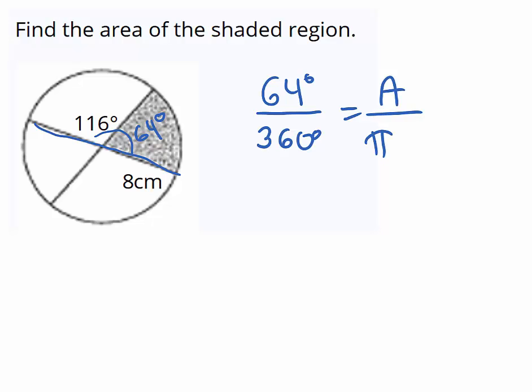all the way around the circle, which is pi r squared. It looks like r is 8, so we're going to square that. Let's solve that. These degrees will cancel, and I'm going to multiply both sides by 64 pi. That'll get rid of it over here and put it over here, 64 pi.